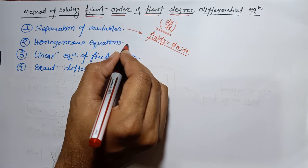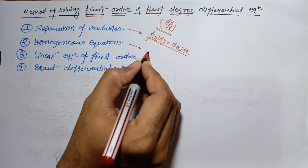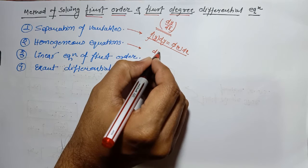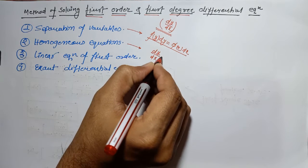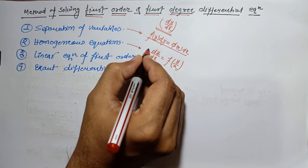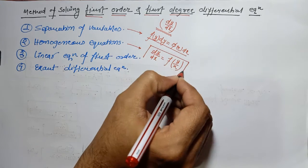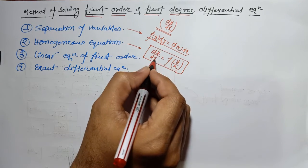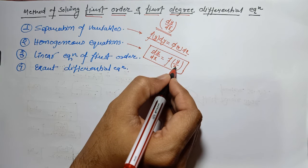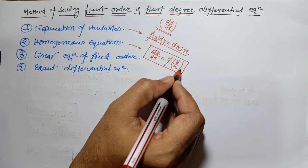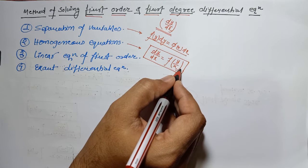The next method is homogeneous differential equations. If any differential equation can be written in the form dy/dx = f(y/x), this type of differential equation is called a homogeneous differential equation.